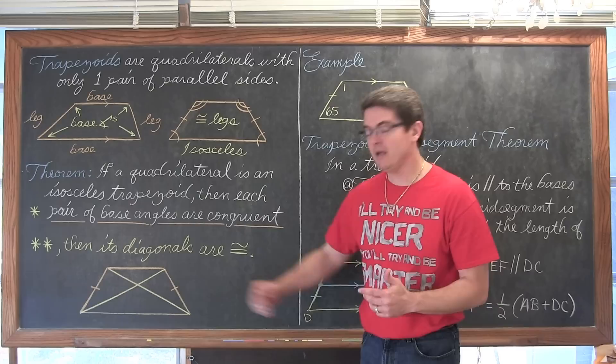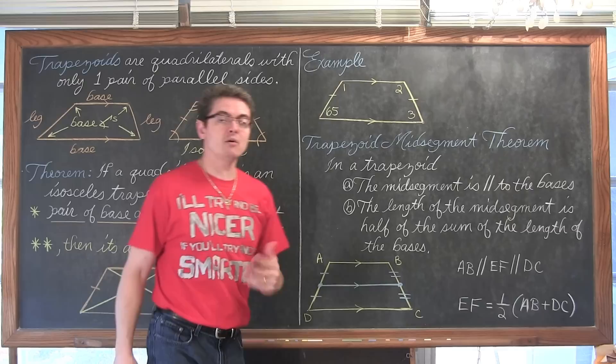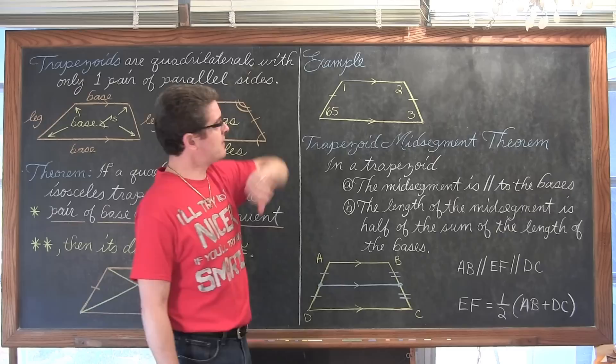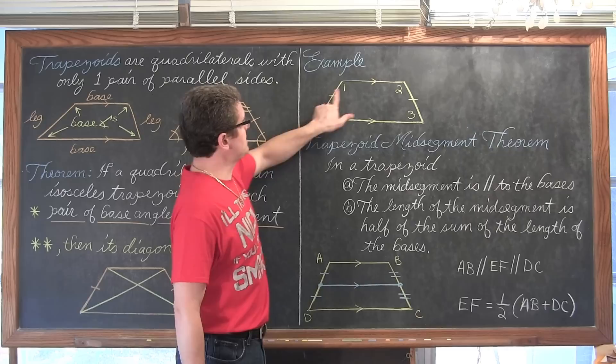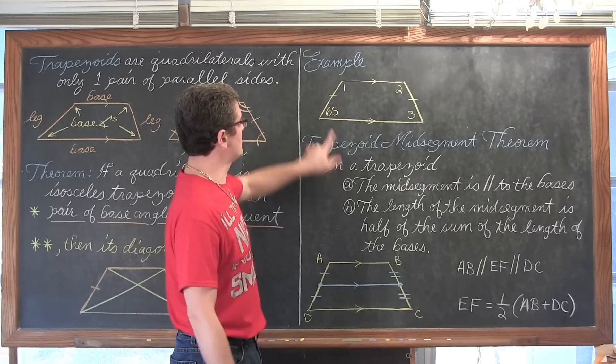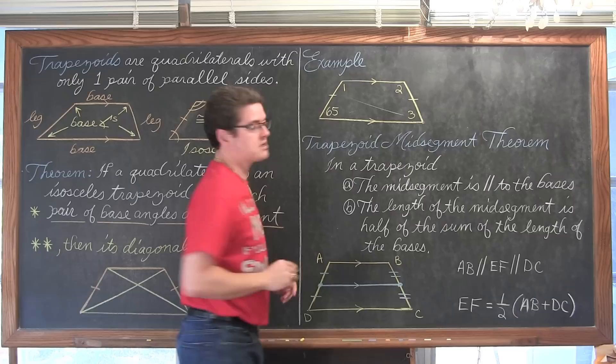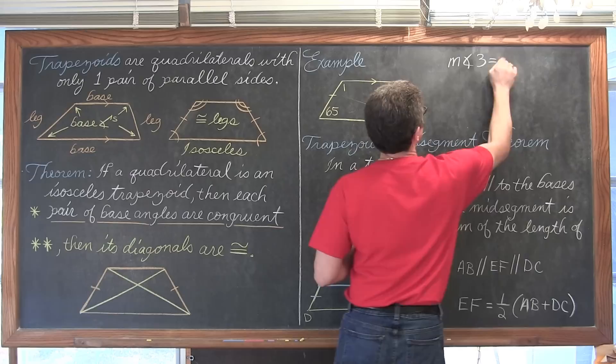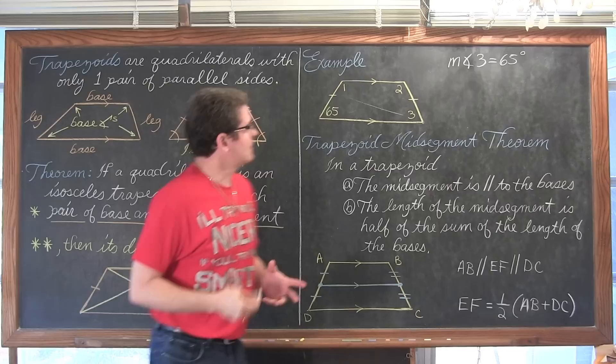We will be proving this particular property at the end of this video. In our example, I have a trapezoid with one pair of opposite sides which are parallel, and I want to find the measurements of all of the angles. The tick marks on each of the legs tell us this is an isosceles trapezoid, and the base angles of an isosceles trapezoid are congruent. So if this angle is 65 degrees, the measure of angle 3 is also 65 degrees.